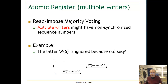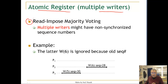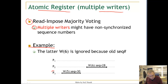Let us now go to multiple writers. Multiple writers is very similar to single writer — it uses read-and-impose with majority voting. The only issue is that multiple writers might have non-synchronized sequence numbers, which means a later write in global time could be ignored. For example, P3 performs a write with sequence number 30.